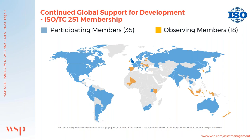We currently have about 35 participating member countries, highlighted in blue on a map, and an additional 18 observing member countries highlighted in orange. There is a high level of rigorous international review by experts in the field, and a series of stages and ballots a document must pass through before it can become an international standard. Even when it does become a standard, it undergoes a five-year review and update cycle.